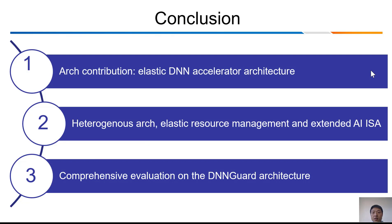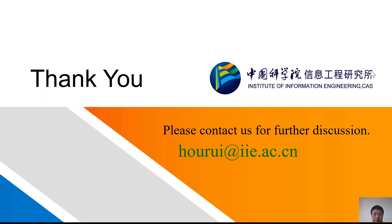In summary, we propose DNN Guard, an elastic heterogeneous DNN accelerator architecture that can efficiently support the simultaneous execution of a target DNN network and a detection algorithm or network that detects adversarial attacks. AI security is one important topic, and I expect to see more research effort in this direction. Thanks for your attention. Any questions, please feel free to contact us. Thanks to the organizers and reviewers of ISPASS 2020.